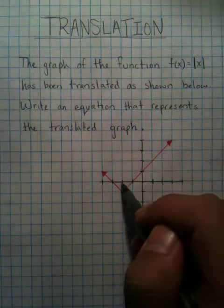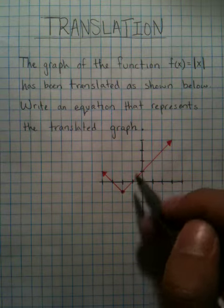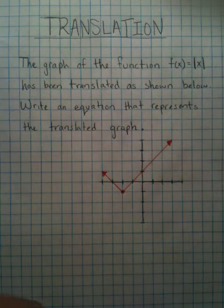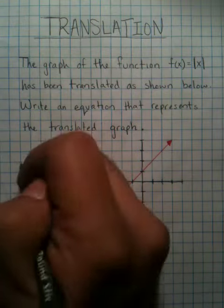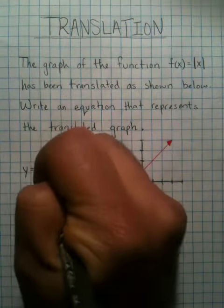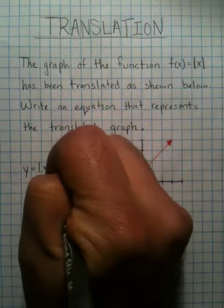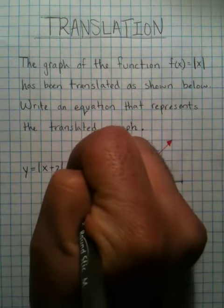But it's moved over 2 and down 1. Literally, you don't have to do any computation whatsoever. This is the answer. I'll write it right now. y equals the absolute value of x plus 2 minus 1.